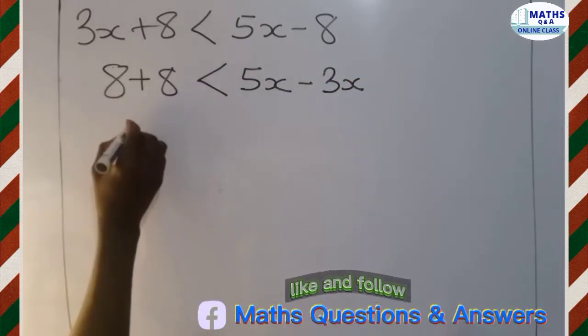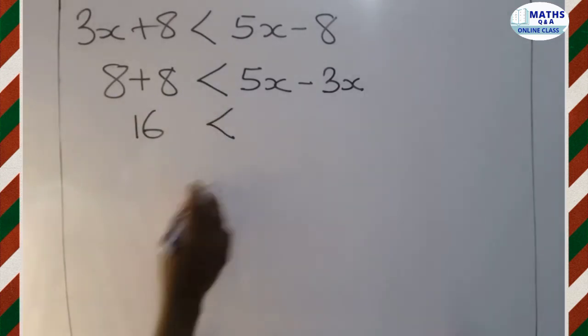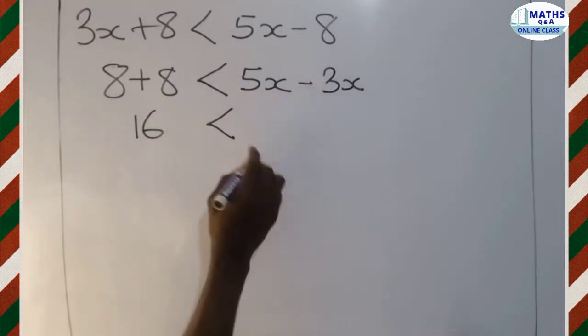So 8 plus 8 gives us what? 16. Less than 5x minus 3x gives us what? 2x.